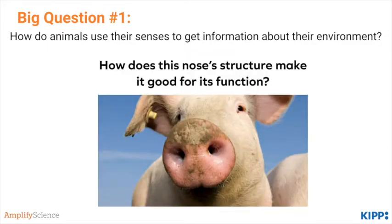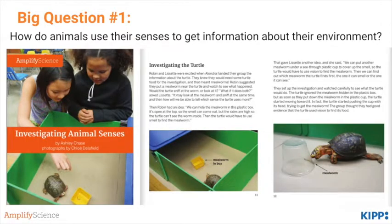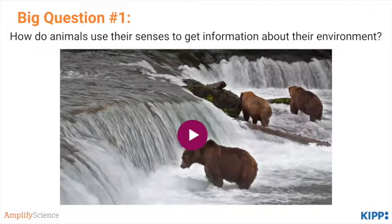Next, students learn about structure and function, specifically focusing on the structures of our sense organs, such as a pig's nose and why it's shaped the way it is with two holes in the middle. Students then read the book Investigating Animal Senses, about a class of students who ask questions about and investigate how certain animals use their senses to find food. Students are introduced to the idea of only testing one variable at a time. Next, students watch several videos of animals using their senses — such as bears using their sense of eyesight to capture fish for food.